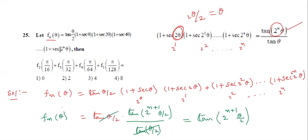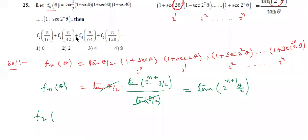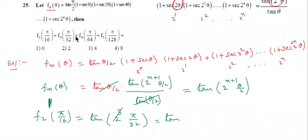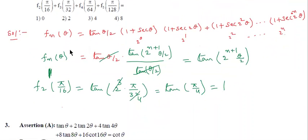So for F2(π/16): comparing, n = 2 and θ = π/16. Substituting: tan(2^(2+1) · π/16 / 2... wait) = tan(2³ · π/32) = tan(8 · π/32) = tan(π/4) = 1. Similarly, find F3(π/32): tan(2^(3+1) · π/32 / ... ) = tan(2⁴ · π/64) = tan(π/4) = 1.